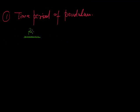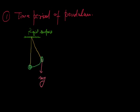This is a rigid surface with an inextensible, flexible thread. Mg always acts towards the center of earth. This angle is theta, and this angle also will be theta. Mg cosθ is balanced by the tension, and the vertical component of this. Mg sinθ brings the body towards the mean position — this is called the restoring force.